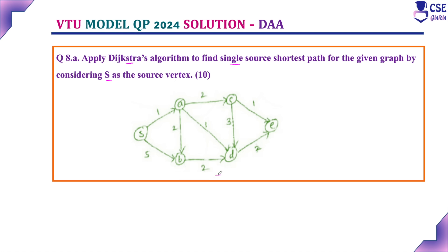Here they have given a graph. We need to consider S as the source vertex and find the single source shortest path. From the source vertex S to all other vertices in the given graph, we need to find the shortest path — that is nothing but single source shortest path. This is a 10-mark question and we need to apply Dijkstra's algorithm.